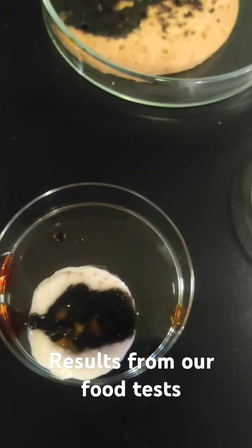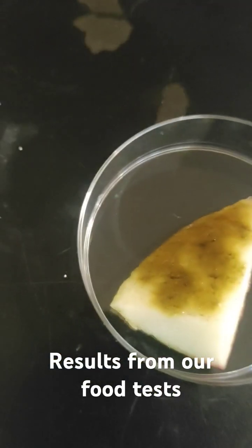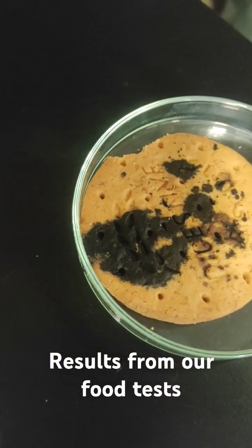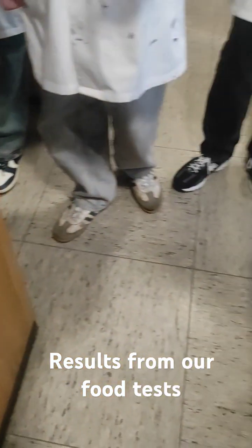So we see here banana have some starch, the apple have a little starch, and the biscuit has a lot of starch.